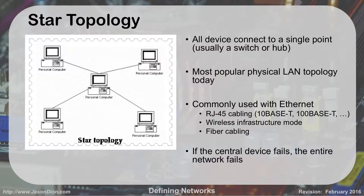The most common topology today is the star topology, where all devices connect back to a single point — usually a switch, in modern networks almost always a switch. This is the most popular physical LAN topology today, used in classrooms and homes. It commonly uses Ethernet with RJ45 cabling — 10baseT, 100baseT, etc. — or wireless, or fiber. The downside is if the central device fails, the entire network goes down. With a ring, if one computer went down it didn't matter; with a star, losing the switch loses everything. But a star is easier to manage, expand, and use.